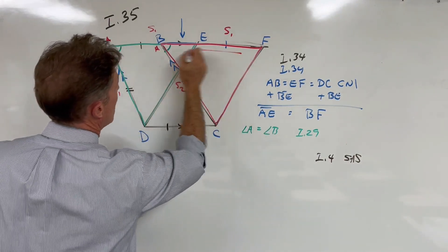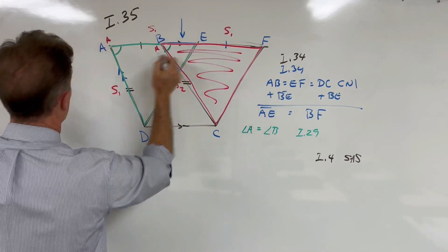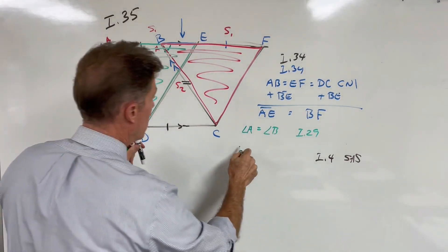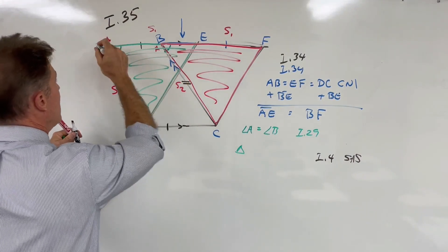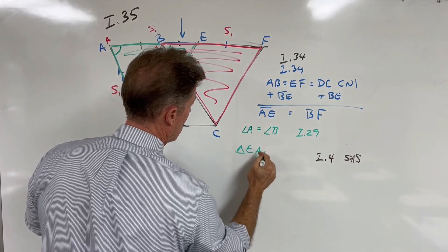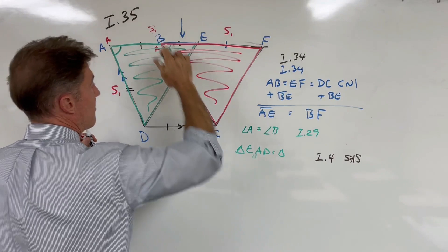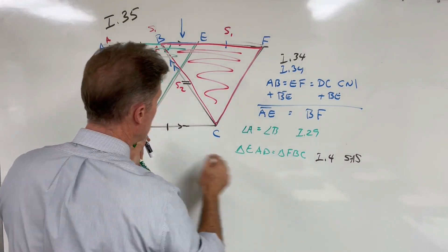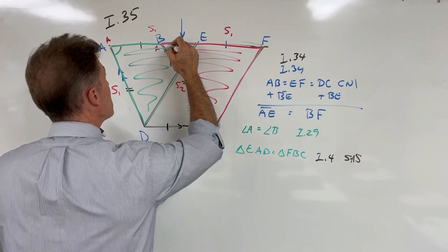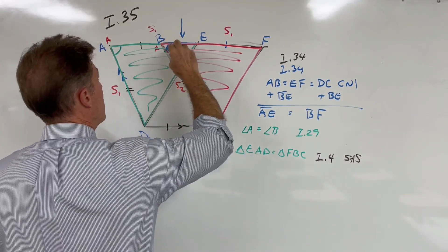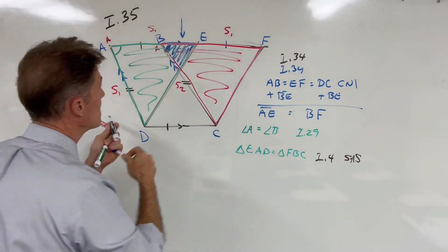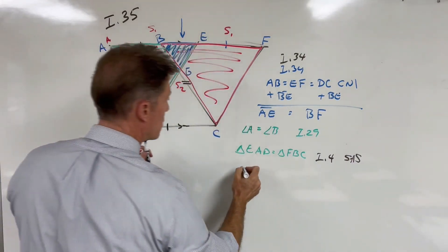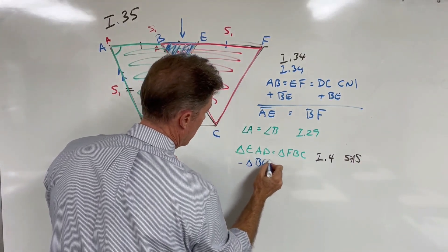Using Prop 4 — side-angle-side — we have two equal triangles. Triangle EAD is equal to triangle FBC. Since the triangles are equal to each other, we can subtract equals from equals and the remainders are equal. There is a triangle in blue that is common to both the red and the green triangles, so we subtract triangle BEG from both sides.